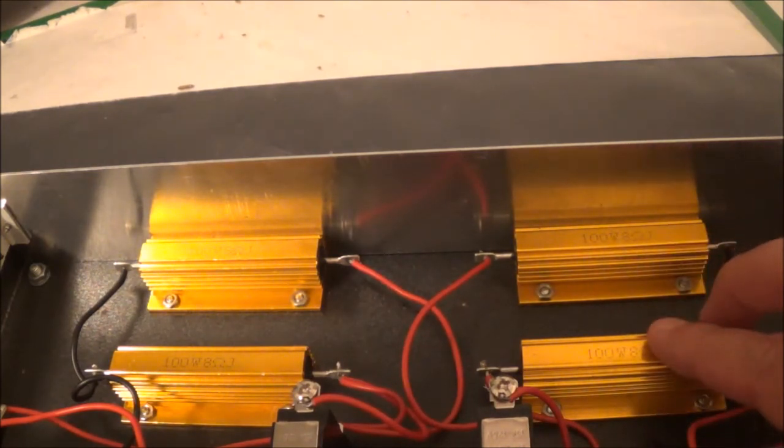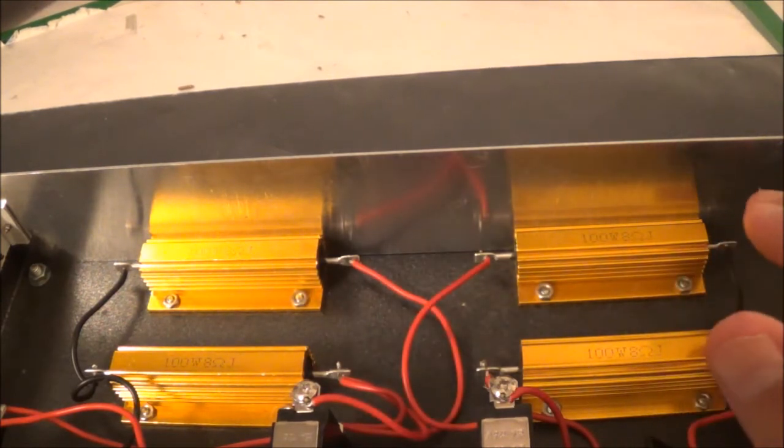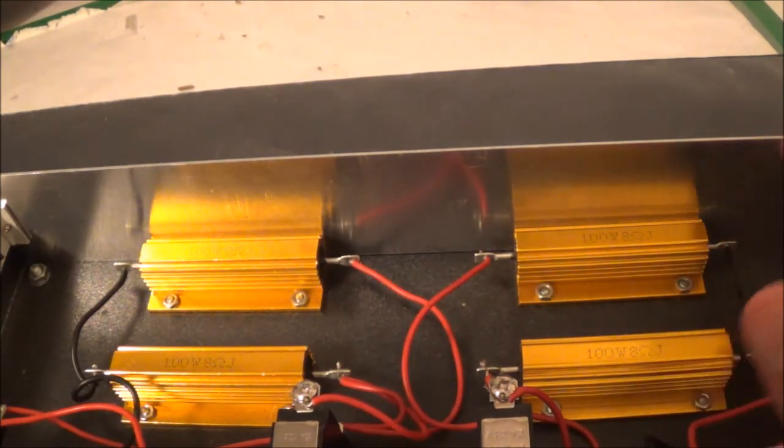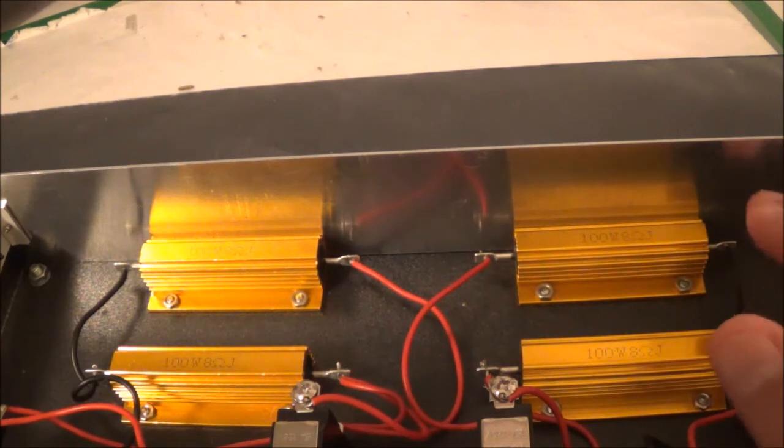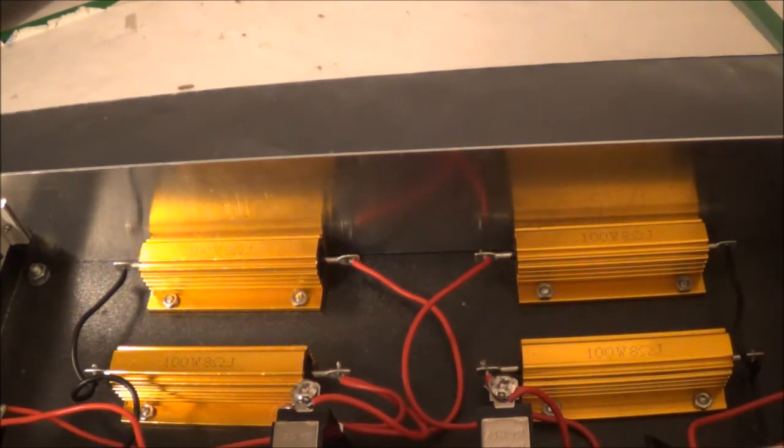What you should really look out for is don't get it like 8.2 or 8.3 ohms because that's going to make a difference if you're measuring, say, a 100 watt amplifier.